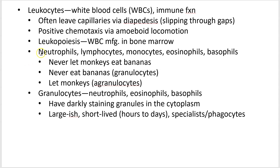There are five different types of leukocytes arranged from most common to least common: neutrophils, lymphocytes, monocytes, eosinophils, and basophils. A way to remember that order is the mnemonic 'Never Let Monkeys Eat Bananas,' which gives you all five in order from most to least common.